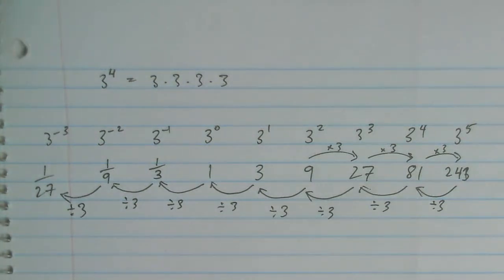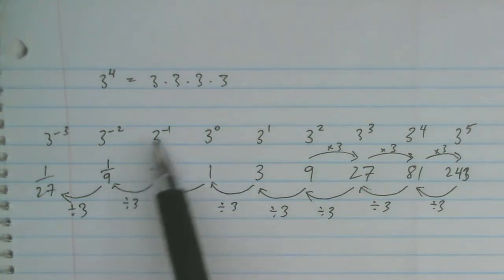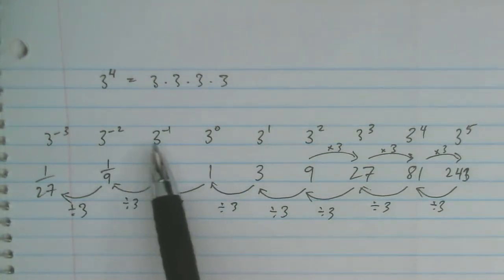So what we've just done is we've shown what an exponent of 0 gives us and what an exponent with a negative integer gives us.